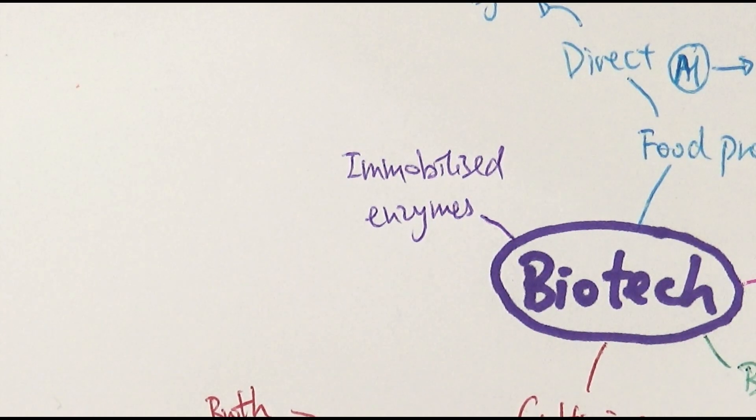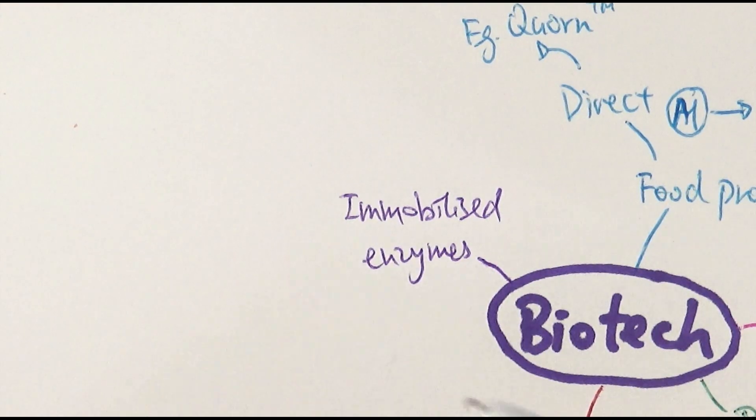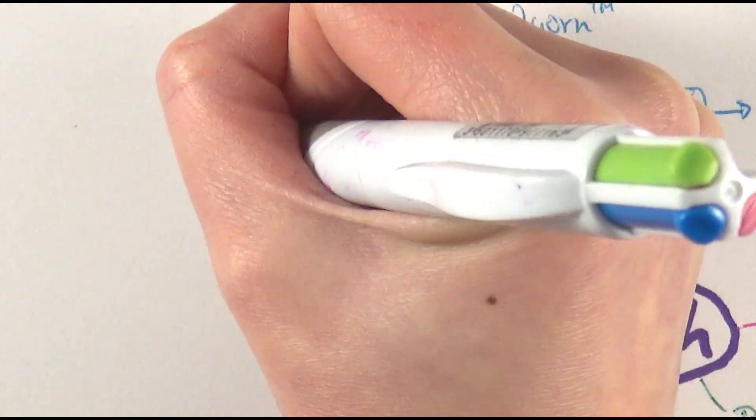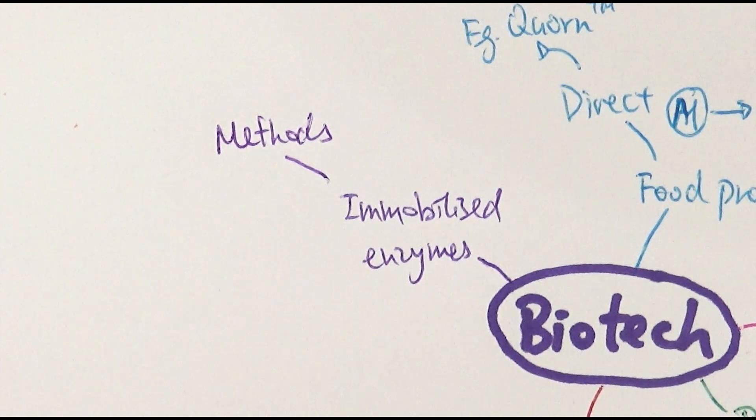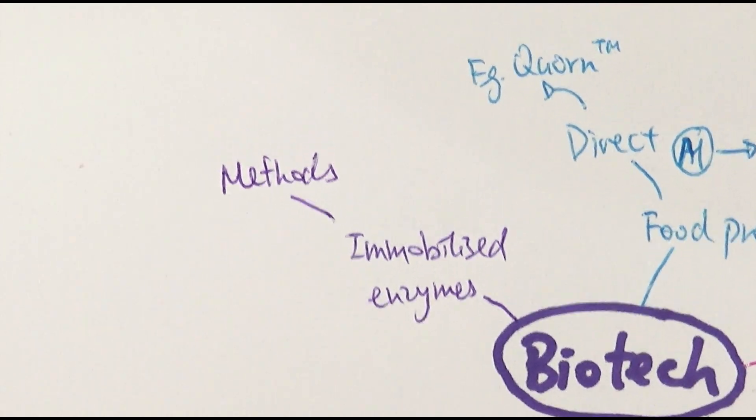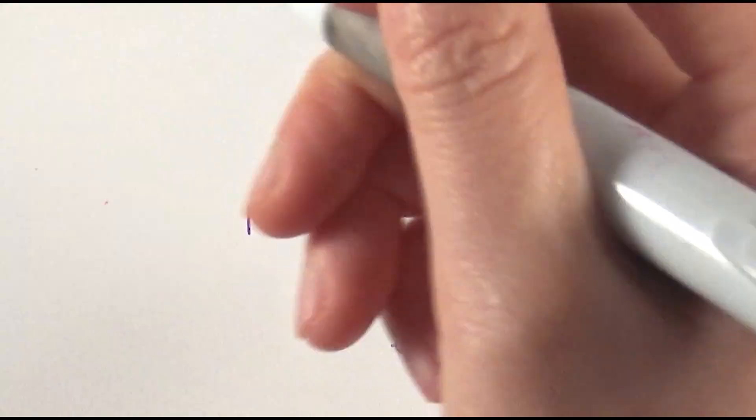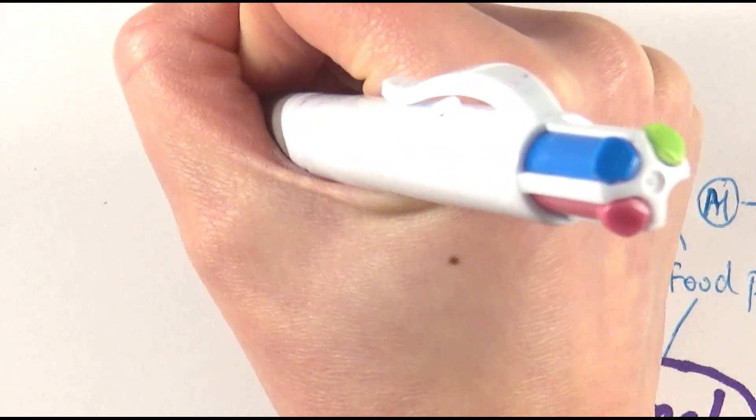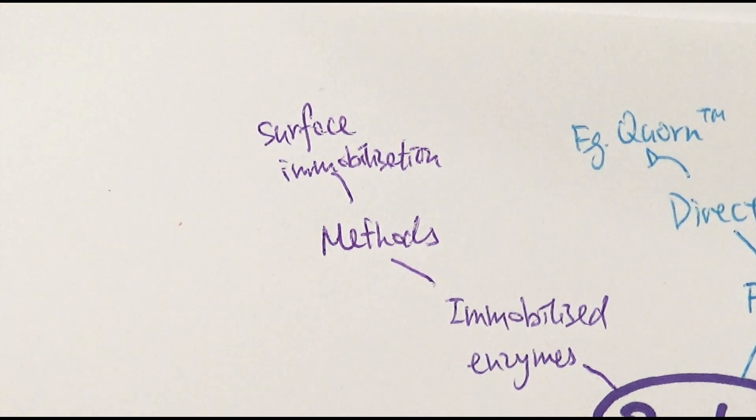The last aspect of biotechnology is the immobilized enzymes. There are largely two parts you need to be aware of. Number one is the methods of doing so. There are four methods you need to know. They can be categorized into two different groups. Number one is surface immobilization. What that is, is we're now just having the enzymes and we're going to try and stick it onto a board or a flat surface of some sort.